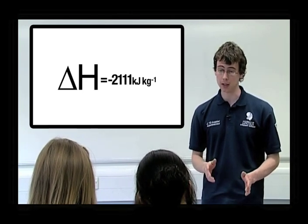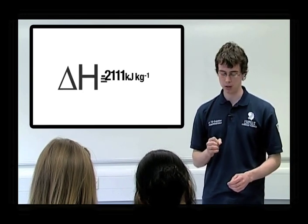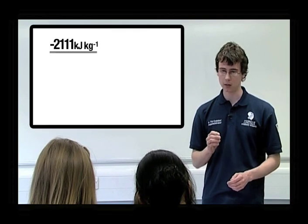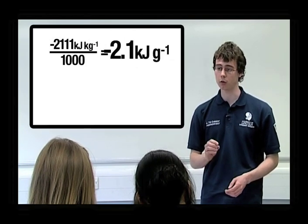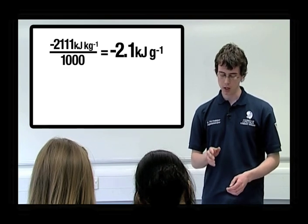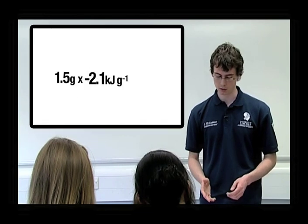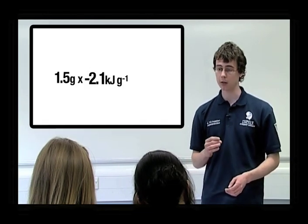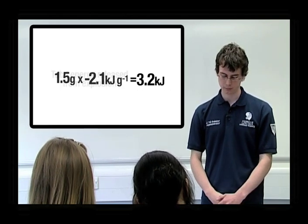Again, this is fairly easy to do. We take the value minus 2,111 kilojoules per kilogram, and divide that by 1000. This is 2.1 kilojoules per gram. Right? We then multiply that by the amount of grams that we used, which was 1.5 grams. The total energy released from our explosion was therefore 3.2 kilojoules.